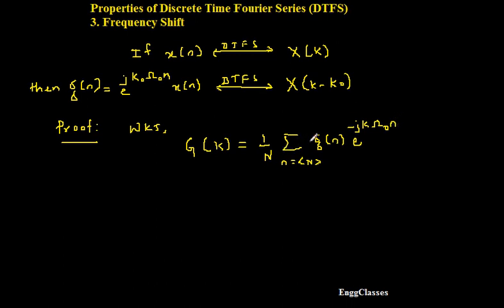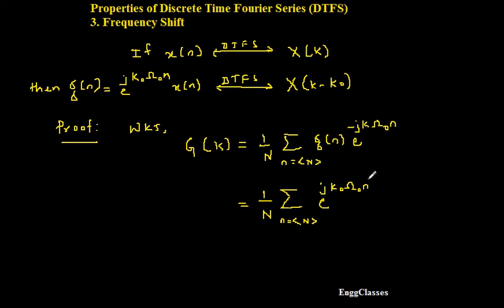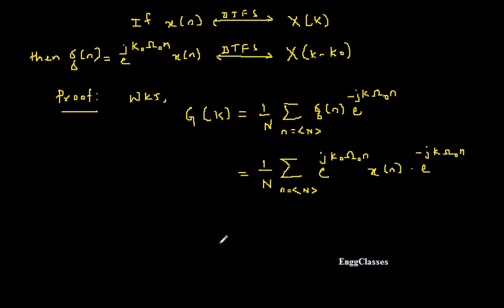Now in this expression I will substitute for g of n. We know that g of n is equal to e to the power j k-naught omega-naught n into x of n. So substituting, I get 1 over N, summation over the range capital N, of e to the power j k-naught omega-naught n into x of n, multiplied by e to the power minus j k omega-naught n. The next step is to keep x of n as it is and combine the two exponential terms into one.